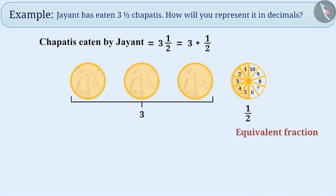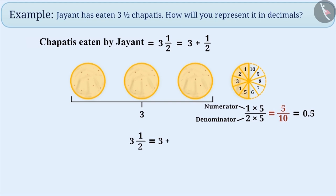There is one more way to find the equivalent fraction of 1 by 2. In order to do this, we will multiply the numerator 1 and the denominator 2 by 5. Therefore, we will get the equivalent fraction of 1 by 2 as 5 by 10. We will write this in its decimal form as 0.5. We can also represent 3 1 by 2 as 3 plus 0.5, that is 3.5.